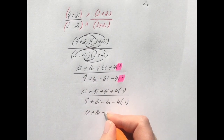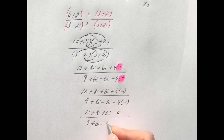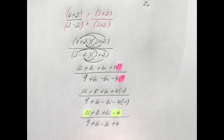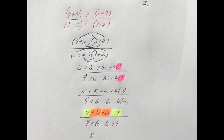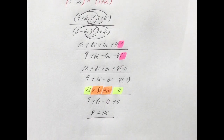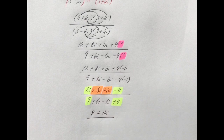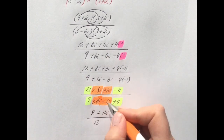Substitute minus 1 for i squared in both. On the top: 4 times minus 1 is minus 4, so the real parts are 12 minus 4 which is 8, and the imaginary parts are 8i plus 6i which is 14i. On the bottom: minus 4 times minus 1 is plus 4, so the real parts are 9 plus 4 which is 13, and 6i minus 6i cancels to 0. Be careful — there are no more brackets so we're just adding and subtracting, not multiplying.